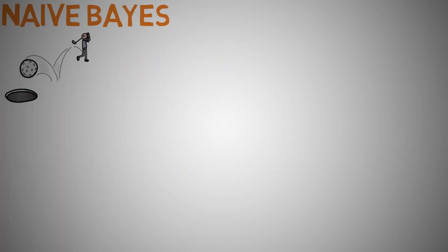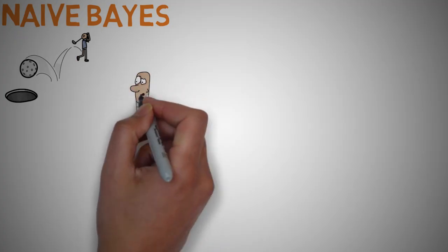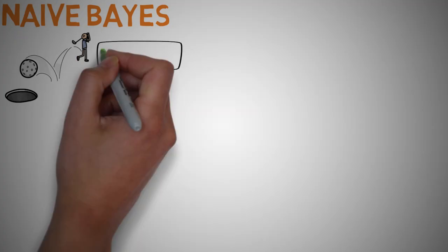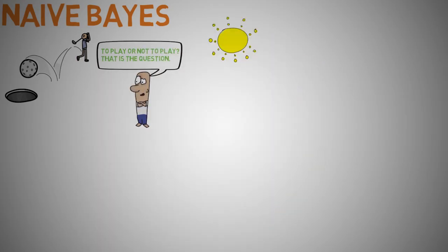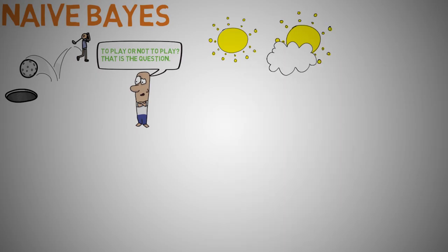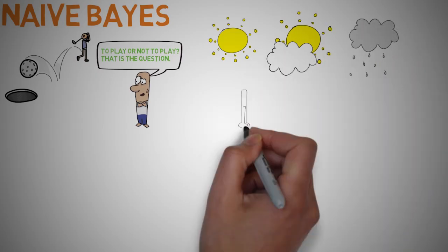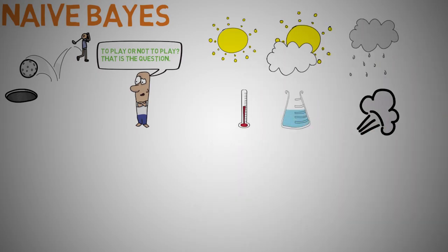It's a good day to play golf. Or is it? Let's take a look at some of the factors that determine whether or not we play today. These features are weather conditions or outlook — if it's sunny, overcast, or rainy. There's also temperature, humidity, and wind.